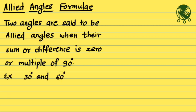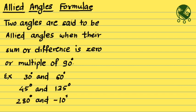For example, 30 degrees and 60 degrees are allied angles because their sum is 90 degrees. Then 45 degrees and 135 degrees are also allied angles because their subtraction is 90 degrees, or their sum is 180 degrees which is twice of 90 degrees. Also, 280 degrees and minus 10 degrees: their sum is 270 degrees, and 270 is a multiple of 90, so they are allied angles.